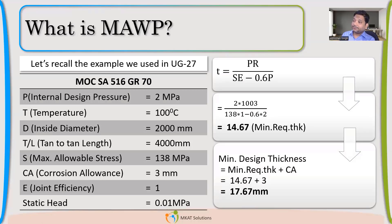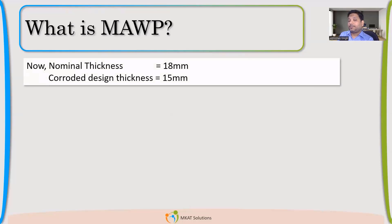Now, what thickness do we select? Can we go with 17.67 mm? No — we need to select a nominal thickness. So we select a nominal plate thickness of 18 mm. Now, this vessel will either be able to take the same amount of pressure or it has the capability to take higher pressure.